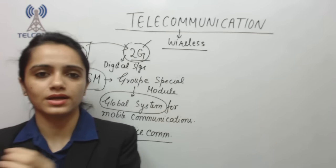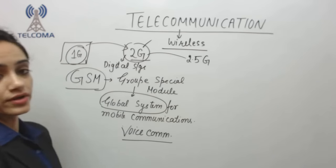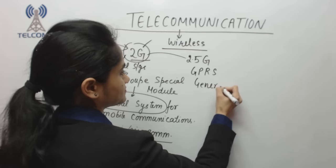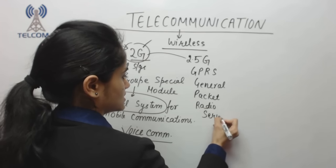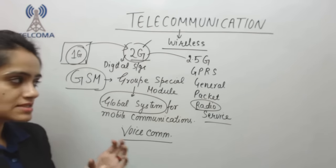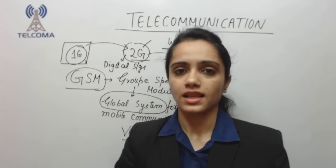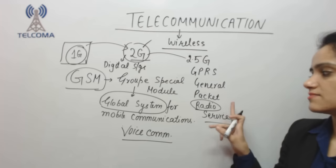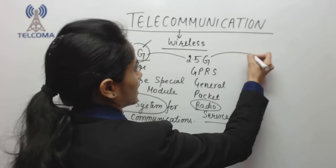After voice, the next requirement was data — accessing data from a server. So we moved to another technology called 2.5G, known as GPRS, which stands for General Packet Radio Service. Here 'radio' means air, so this is packet transmission through an air interface with no dedicated connection — no LAN wire directly to a computer. We access internet through the air as a radio service. However, the data rate in GPRS is very low, so we required higher data rates.